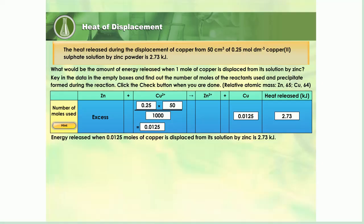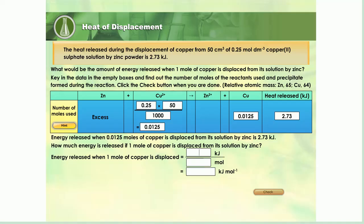Yes, 2.73 kilojoules of heat is released when 0.0125 moles of copper is displaced from its solution by zinc. But how much energy would be released if one mole of copper is displaced from its solution by zinc? Key in the data in the empty boxes to calculate your answer. Yes, the energy released when one mole of copper is displaced from its solution by zinc is 218.4 kilojoules.